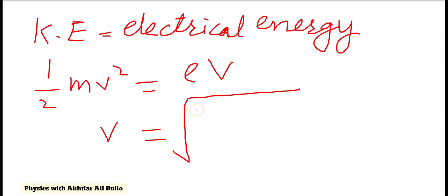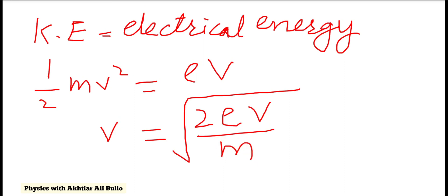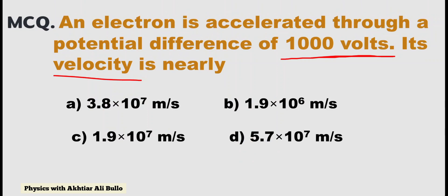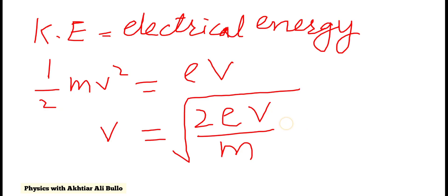The velocity v equals √(2eV / m). Here, e is the charge on the electron which is 1.6×10⁻¹⁹ coulombs, and m is the mass of the electron which is 9.1×10⁻³¹ kg, and V is the electric potential which is 1000 volts.